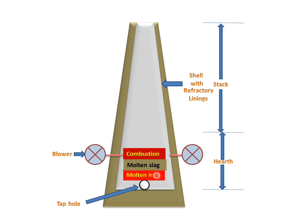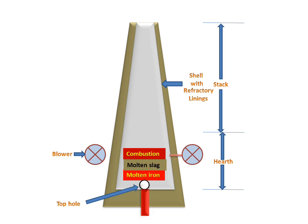The molten iron layer will be the lower layer of the three layers, and this molten iron will be extracted from the tap hole. The blower will supply air in the conversion region, rotating to supply fresh air to the furnace. After processing, the molten iron is extracted out from the tap hole. This is the working of the blast furnace for extracting pig iron from the iron ores.